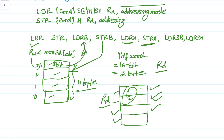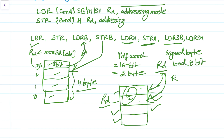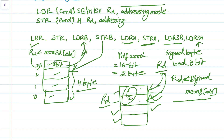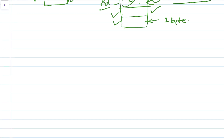STRH can store Rd into a half word — that means 2 bytes. Similarly we have LDRSB, that is load signed byte into the register. It performs a sign extension, loading 8-bit data, meaning Rd would be loaded from a sign-extended 8-bit memory space — only one byte. Let's try to understand this with an example.